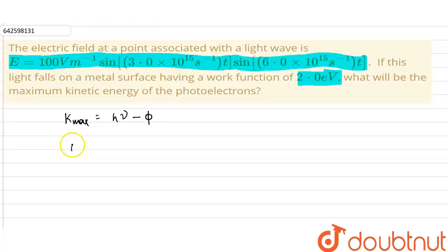So the equation given to us is 100 sine 3 into 10 raised by 15 t into sine 6 into 10 raised by 15 t.